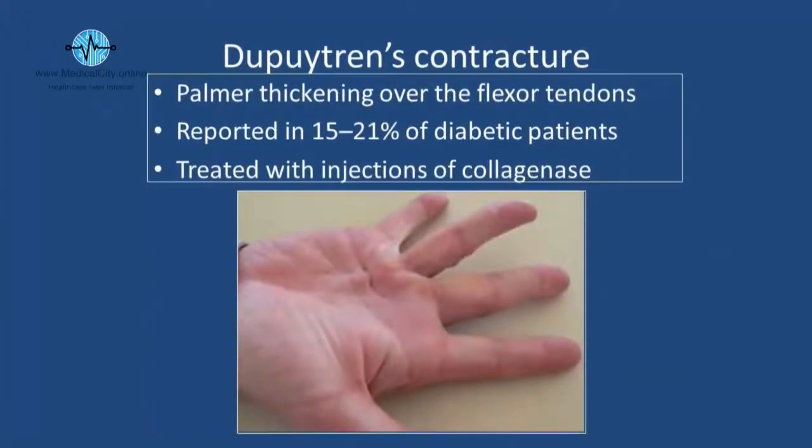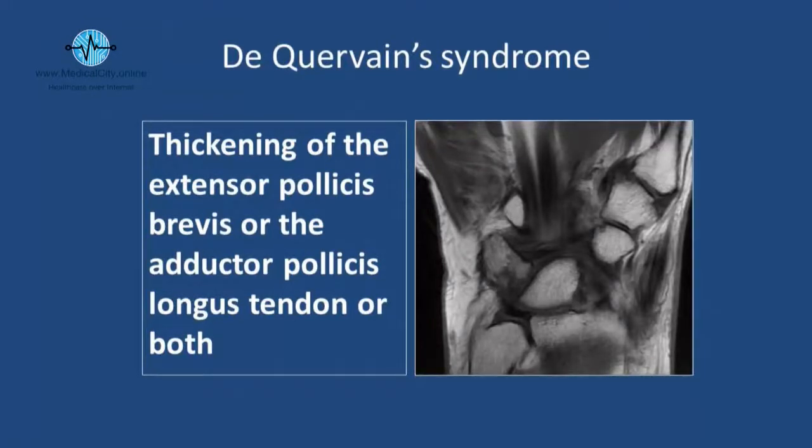Dupuytren's contracture involves the palmar fascia rather than the deep flexor tendon. We now have collagenase injections as a local treatment, because the surgical operation is quite serious, requiring deep cutting and skin grafting. De Quervain's tenosynovitis is similar — patients present with pain at the base of the thumb. Diagnosis is by the Finkelstein test: place the thumb inside the fist and flex the wrist toward the ulnar side. It can only be done once because it is very painful.